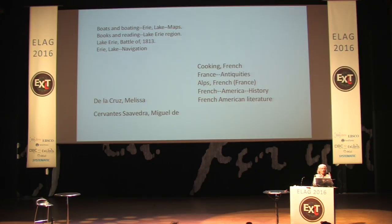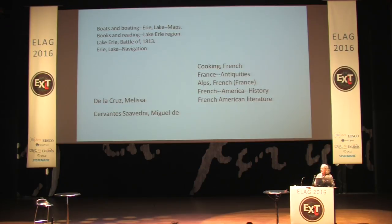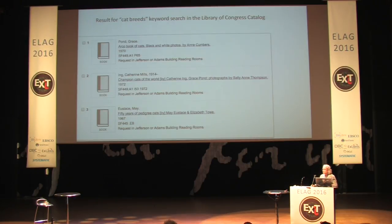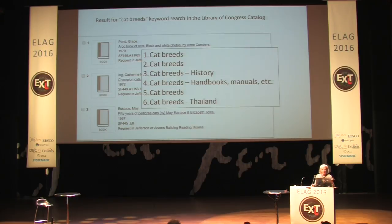Prior to keyword searching, users were having a terrible time finding things in the catalog. How would you know that it's 'Lake Erie, Battle of' or 'Erie Lake navigation'? And why is it 'French-American literature' but 'Cooking, comma, French'? There are strict rules for this, and those rules are totally invisible to the user. So users loved being able to do searches without worrying about the possible order of things. However, the catalogers hated it. When you do a search today, like for cat breeds in the Library of Congress catalog, you get results and you don't know why, and the order is not the knowledge order that the catalogers had presented — it comes out in just any old order, unrelated to what was searched on.